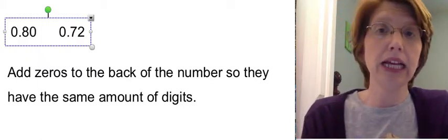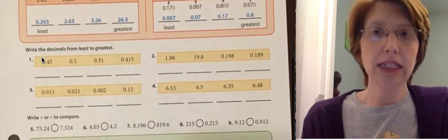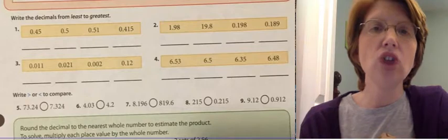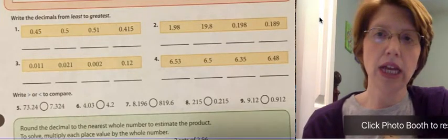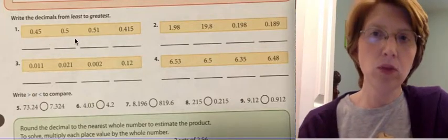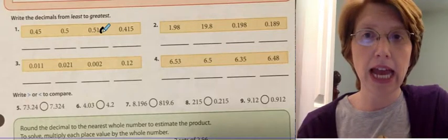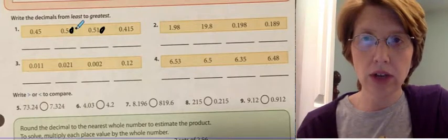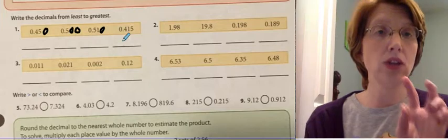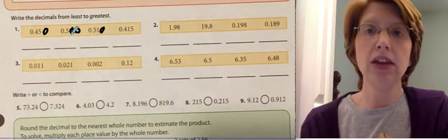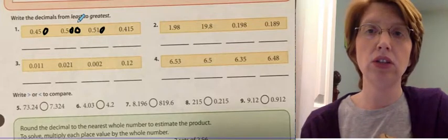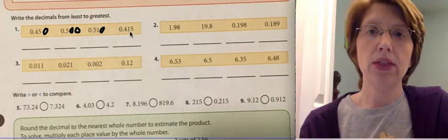You're going to be comparing a list of numbers today. It says write the decimals from least to greatest. Before I even start, I would take your pencil and make all of the numbers the same size up here. So if this one has three digits behind it then every one of these numbers needs to have three digits behind it. And how do I do that? I add a zero. So I'm going to add a zero there, here I'm going to add two zeros, and here I'm going to add a zero. Now I can just compare them — I can look at the number as a whole. 415, 510, 500, 450. So which one is the smallest? We have to do least to greatest.